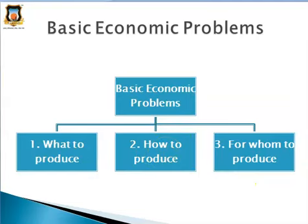The third problem is 'for whom to produce.' Goods and services produced in the economy are consumed by its citizens. The individuals may belong to economically weaker sections or rich classes of people. So the country has to decide for which class or which section of the people we are going to produce goods and services.